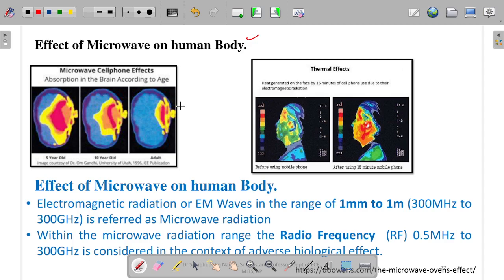Let us see what it is. You can see these images here. These are microwave cellphone effects - absorption in the brain according to age.